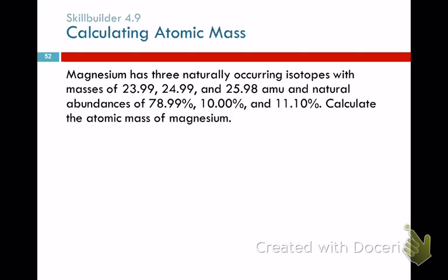Magnesium has three naturally occurring isotopes with masses of 23.99, 24.99, and 25.98, and naturally occurring abundances of 78.99%, 10.00%, and 11.10%. It's so irritating that it doesn't add up to exactly 100 — but that's real data; measurement percentages don't always do that for you.